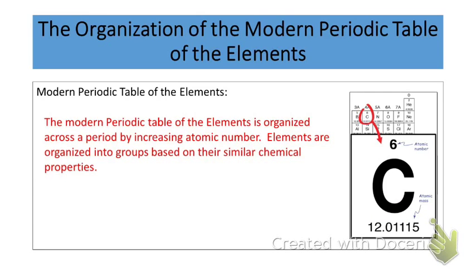All right, now this is the big take-home message right here. This is what you have to understand about the organization of the periodic table. The modern periodic table of elements is organized across, that's going from left to right, across the period, by increasing atomic number. Vital, important, okay? Increasing atomic number going across the periodic table. On the other idea is that the elements are organized into groups based on their chemical properties, which we've mentioned earlier. Okay, big take-home message right there.